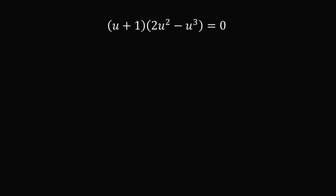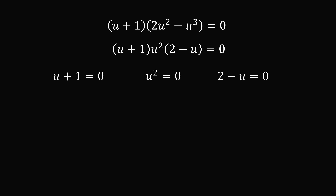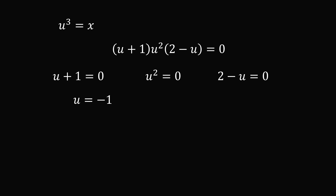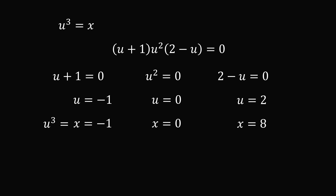We now have (u plus 1) times u squared times (2 minus u) equals 0. Factoring u squared from 2u squared minus u cubed gives u squared(2 minus u). Since the product of three terms equals zero, at least one must be zero: u plus 1 equals 0 gives u equals negative 1, so x equals u cubed equals negative 1. u squared equals 0 gives u equals 0, so x equals 0. And 2 minus u equals 0 gives u equals 2, so x equals 8. We have three possible solutions: x equals negative 1, 0, or 8.